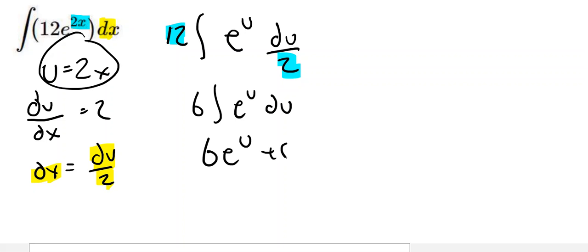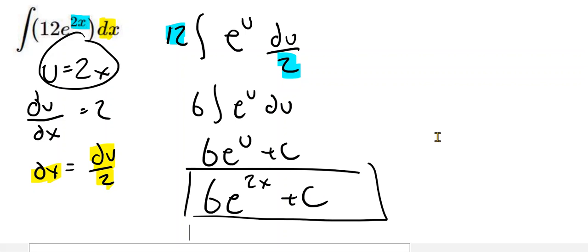Last but not least, we simply replace u with its original value, which is 2x. And there we have our answer. So there's just two quick examples of problems that you might see involving u-substitution.